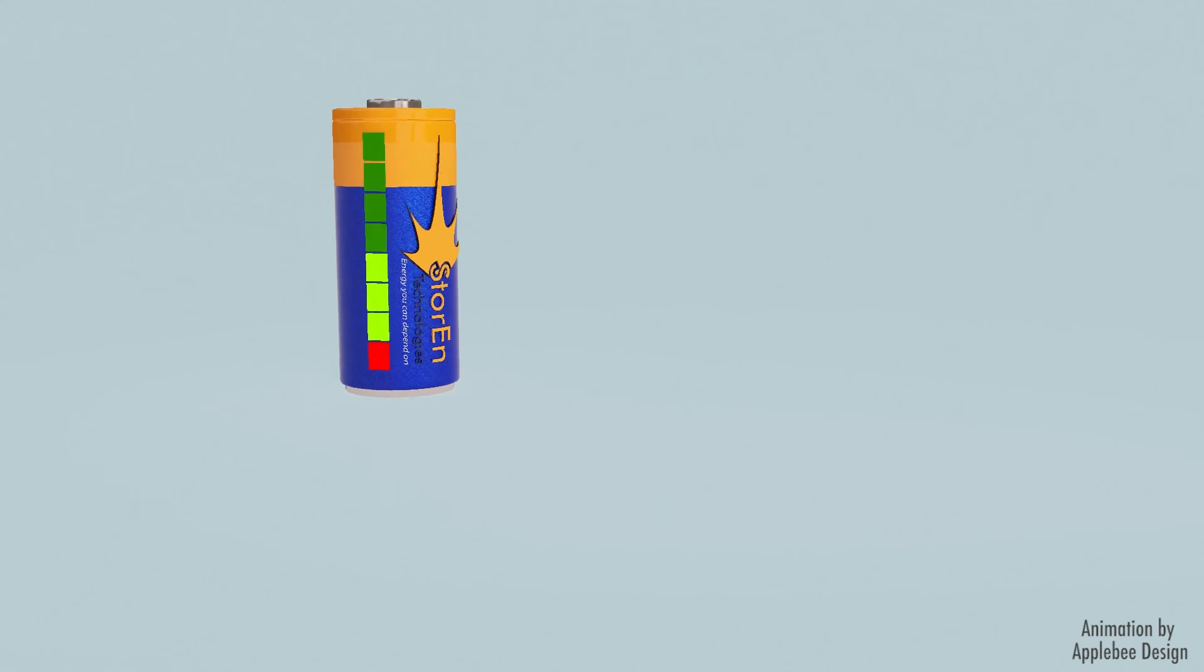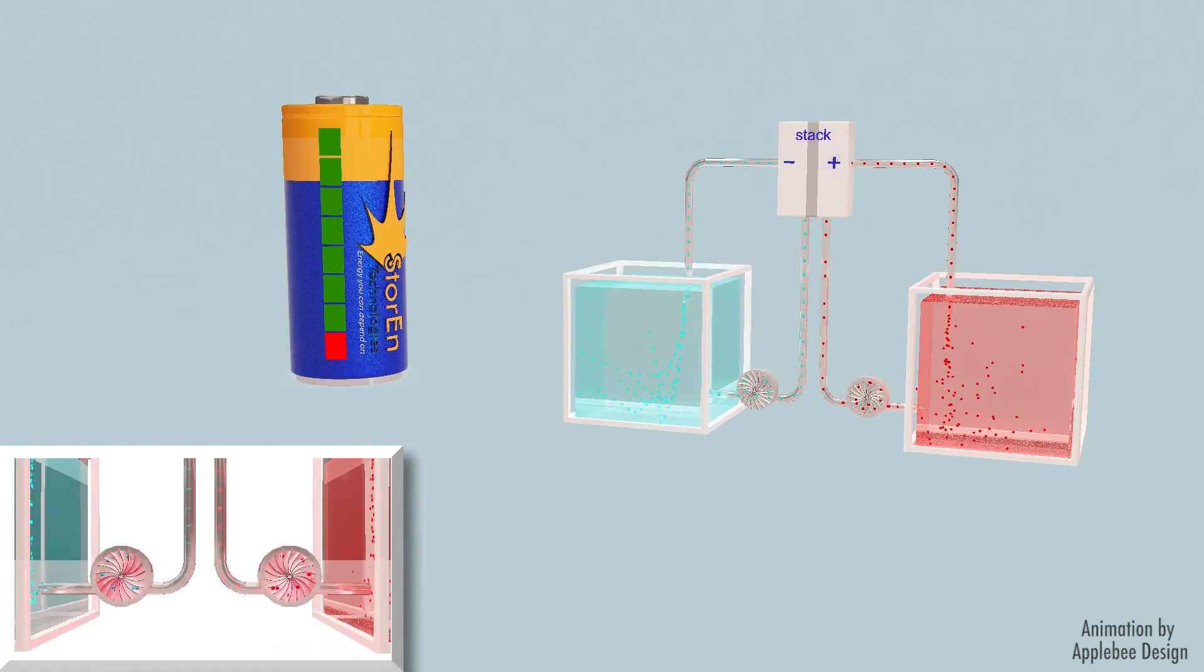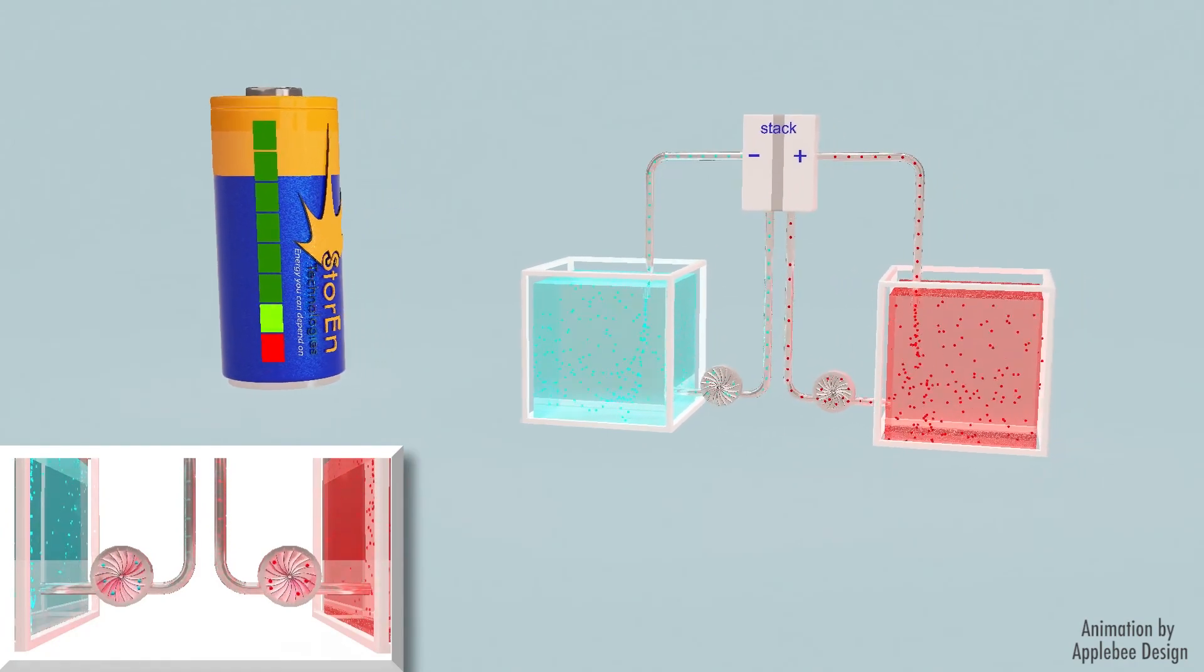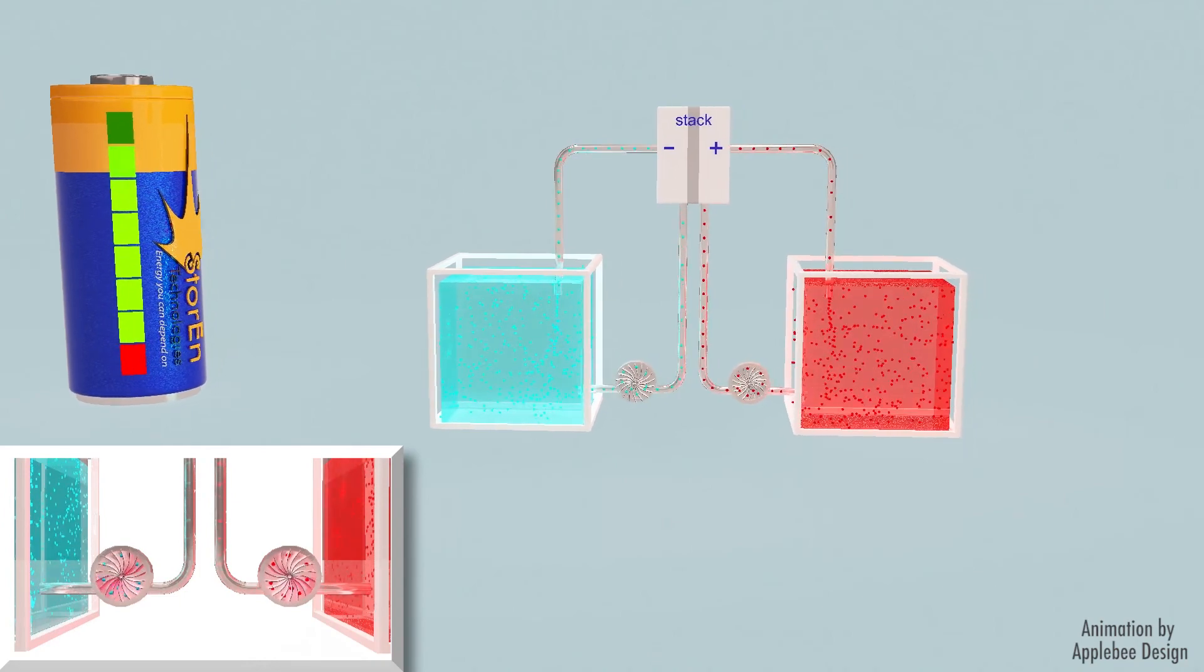While the battery is discharging and providing power, the positive electrolytes are reduced, thus releasing one electron. This way, the negative electrolytes oxidize. While charging, the opposite process takes place.